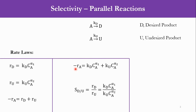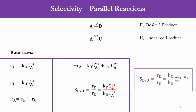Writing the equation for selectivity: S_D/U is equal to R_D over R_U, where R_D is equal to K_D times C_A raised to power alpha 1, and R_U is equal to K_U times C_A raised to power alpha 2. This is the finalized relation which we will be using, and we obviously want to maximize the value of selectivity. We will be dealing with four cases to see how we can maximize it.